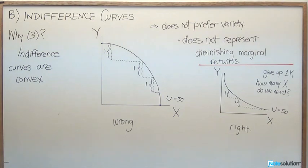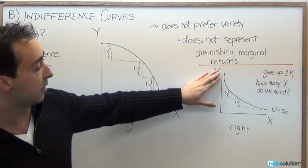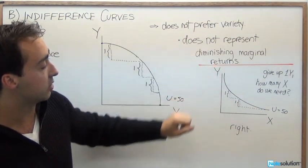So, kind of to recap here, we do in fact want variety. So that's going to be represented by this indifference curve here, represented by that convex shape.